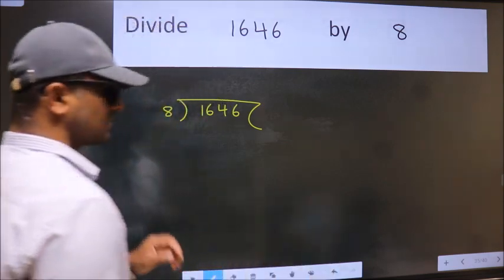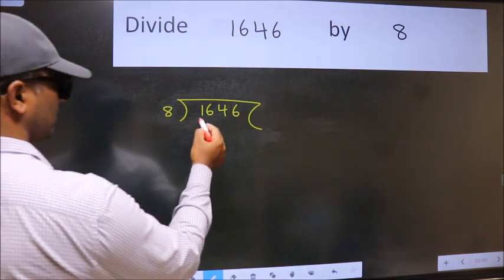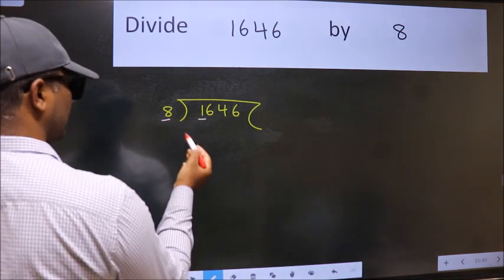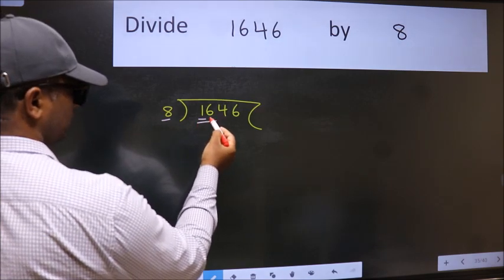This is your step 1. Next, here we have 1 and here 8. 1 is smaller than 8, so take 2 numbers: 16.